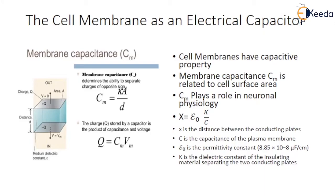From this value of the membrane capacitance, the thickness of the insulating lipid portion of the membrane can be estimated and it is shown in this slide, X = ε₀K/C, where X is the distance between conducting plates, C is the capacitance of the plasma membrane, ε₀ is the permittivity constant equal to 8.85 × 10^-8 µF per cm, and K is the dielectric constant of the insulating material separating the two conducting plates. The calculated membrane thickness is approximately 4.5 nm which is similar to the membrane thickness of approximately 7.5 nm estimated with electron microscopy. The thickness estimated from capacitance is less because it is determined by the insulating portion of the membrane, whereas the total membrane thickness including associated proteins is observed through the electron microscope.